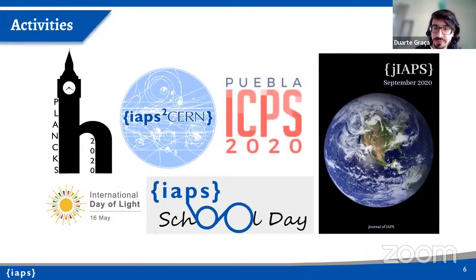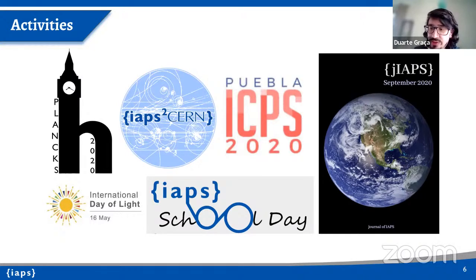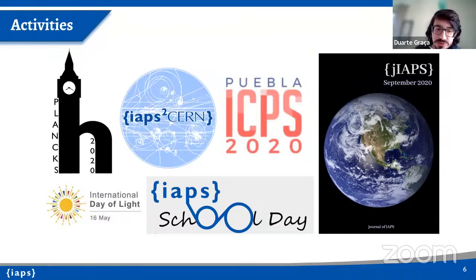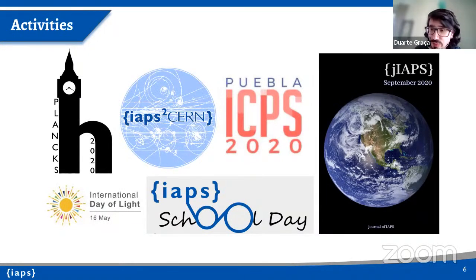The main activities of IAPS include PLANCKS, an international theoretical physics competition; the International Conference of Physics Students, which is basically the flagship event; an annual excursion to CERN; and outreach events like the International Day of Light, in which IAPS participates, and the School Day organized by members throughout the world.